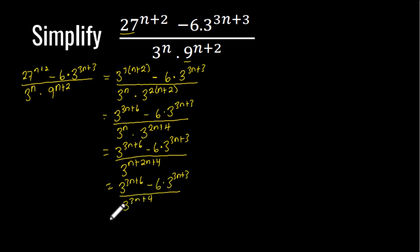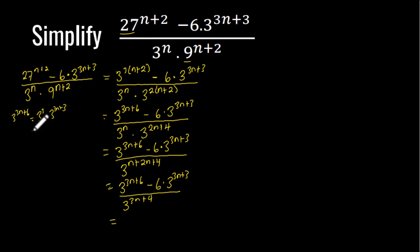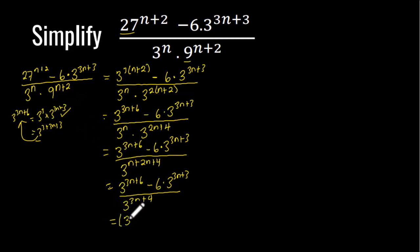Looking at the numerator, 3 exponent (3n+6) can be rewritten as 3 exponent 3 times 3 exponent (3n+3), since adding those exponents gives 3 exponent (3+3n+3) = 3 exponent (3n+6). So the numerator becomes 3 exponent 3 times 3 exponent (3n+3) minus 6 times 3 exponent (3n+3), all divided by 3 exponent (3n+4).